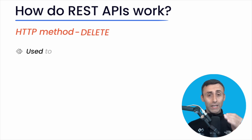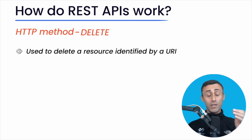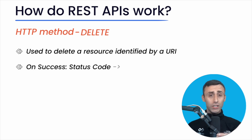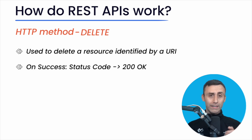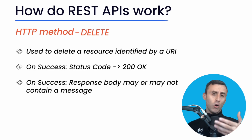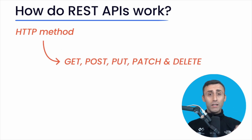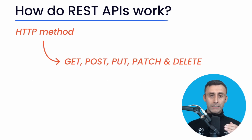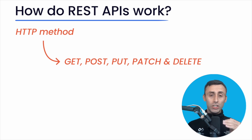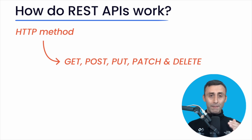DELETE: It's used to delete a resource identified by a URI. On a successful deletion, the server returns HTTP status 200 along with a response body or a simple message. As you might have understood by now, these HTTP methods give us a very flexible way of working with REST APIs. The additional features that come alongside these methods make REST APIs even more helpful.